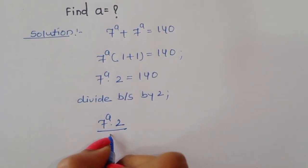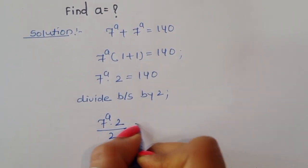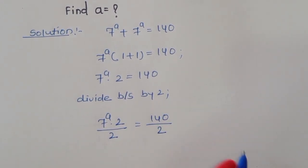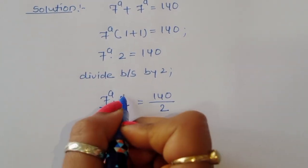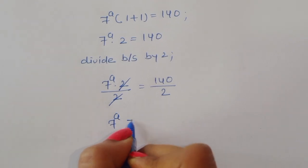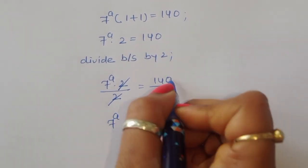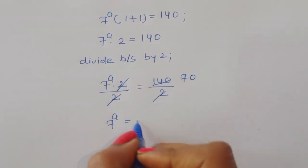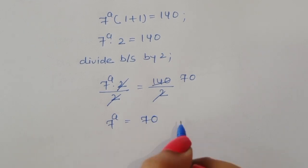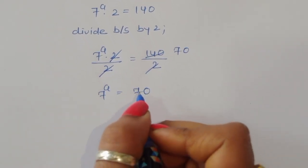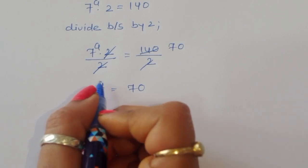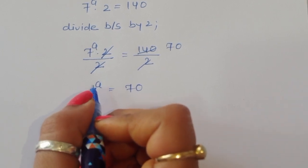Now divide both sides by 2. Then we get 7 power a times 2 divided by 2 is equal to 140 divided by 2. The 2 cancels, so 7 power a is equal to 70.